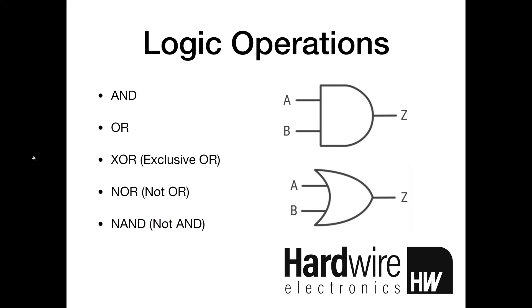These operations are AND, OR, XOR, NOR, and NAND. If you've never seen any of these before they might look confusing, but once you understand them they're really quite simple.